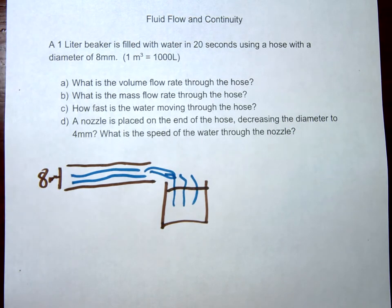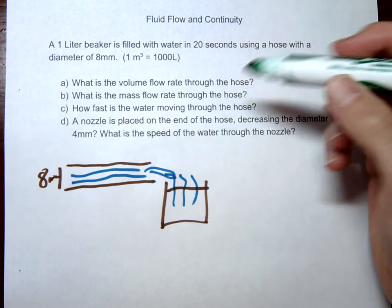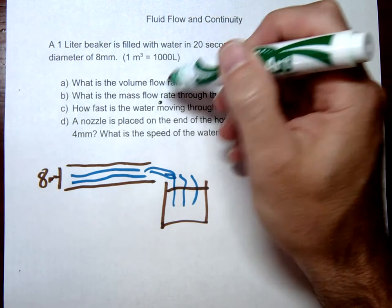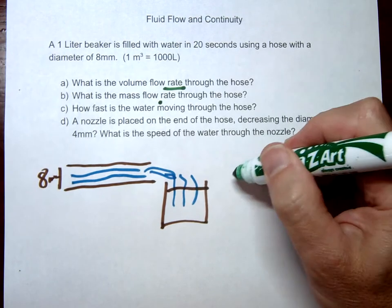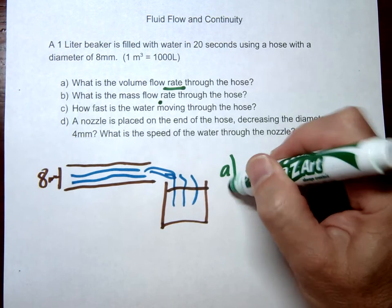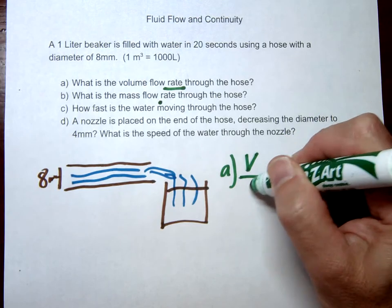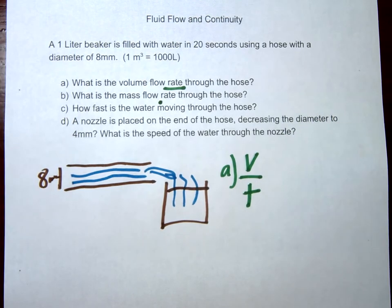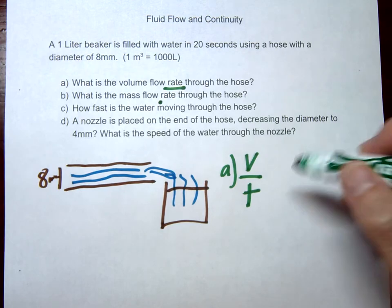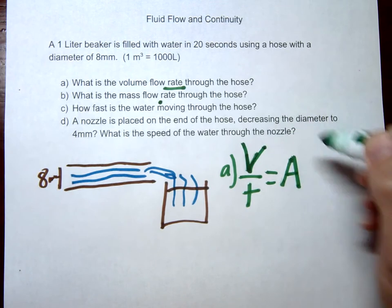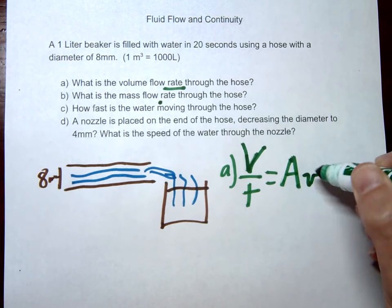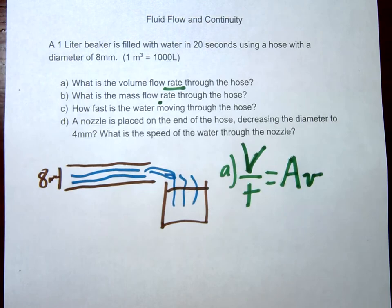So the first question is asking for the volume flow rate. So volume flow rate, any time you see the word rate, you should think something over time. So in this case, our something over time is going to be volume per time, so that would be our volume flow rate. And in the video we derived that equation, so this would be volume over time and this would be also equal to area times velocity.